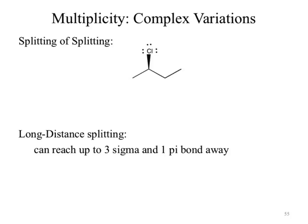Complex splitting: I want to know the splitting pattern for a specific dashed hydrogen. Going three bonds in each direction, it has two purple neighbors to the right and three black neighbors to the left — five total. But we'd be wrong to just say six peaks, because the black and purple hydrogens are different and can't be grouped. Our red signal first sees the two purple hydrogens and splits into a triplet. Then it sees the three black neighbors and each of those three peaks splits into a quartet — giving a triplet of quartets.